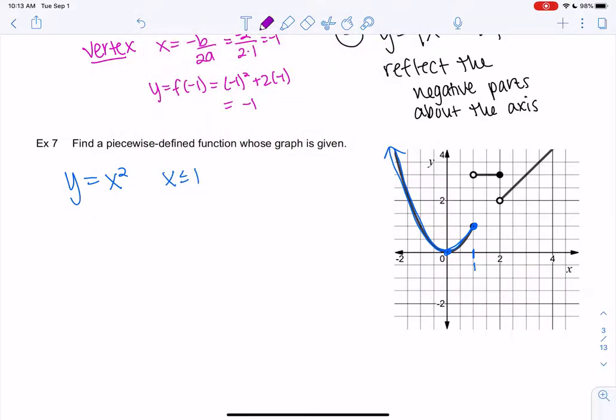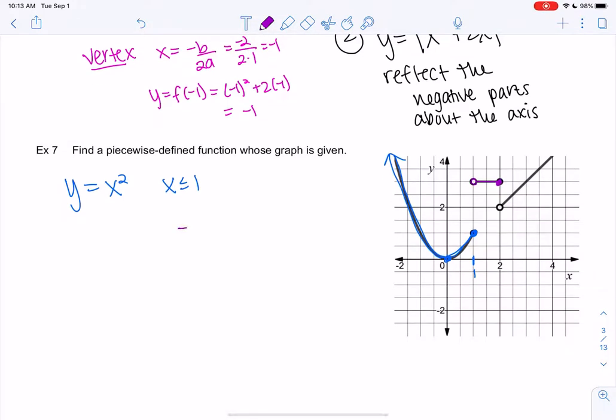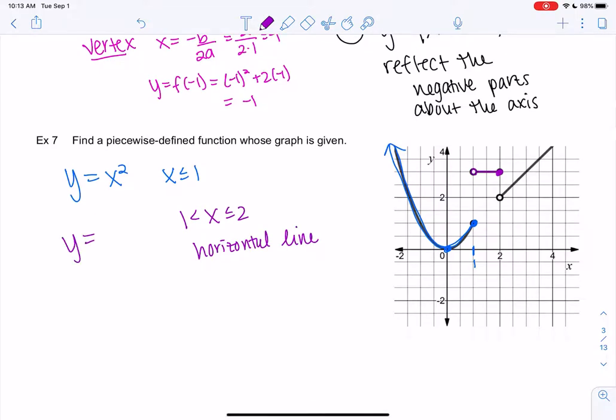The next piece looks like it goes from 1 to 2. I'm going to include the 2 because of the closed circle. I'm not going to include the 1. And then it's a horizontal line. What kind of curve is a horizontal line? It's just y equals a number. So what number would that be? It looks like 3, so y equals 3.